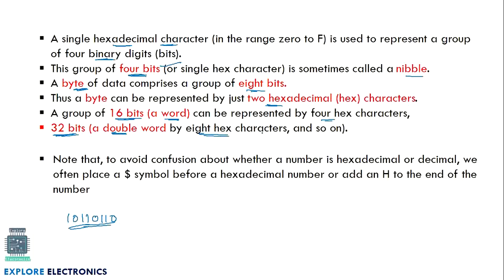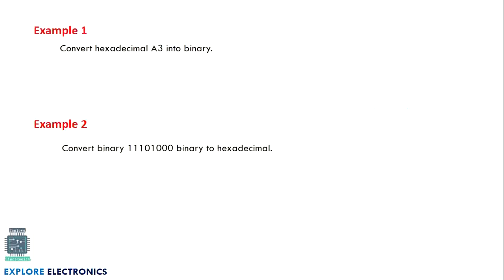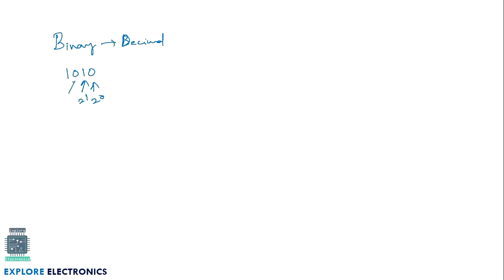We need to understand how to convert hexadecimal to binary and binary to hexadecimal. First, converting binary to decimal: for the binary number 1010, we take the weights — 2^0, 2^1, 2^2, 2^3. Where zeros exist we neglect, where ones exist we add the weights: 2^3 = 8 plus 2^1 = 2 gives 10. So decimal 10 is represented as 1010 in binary.